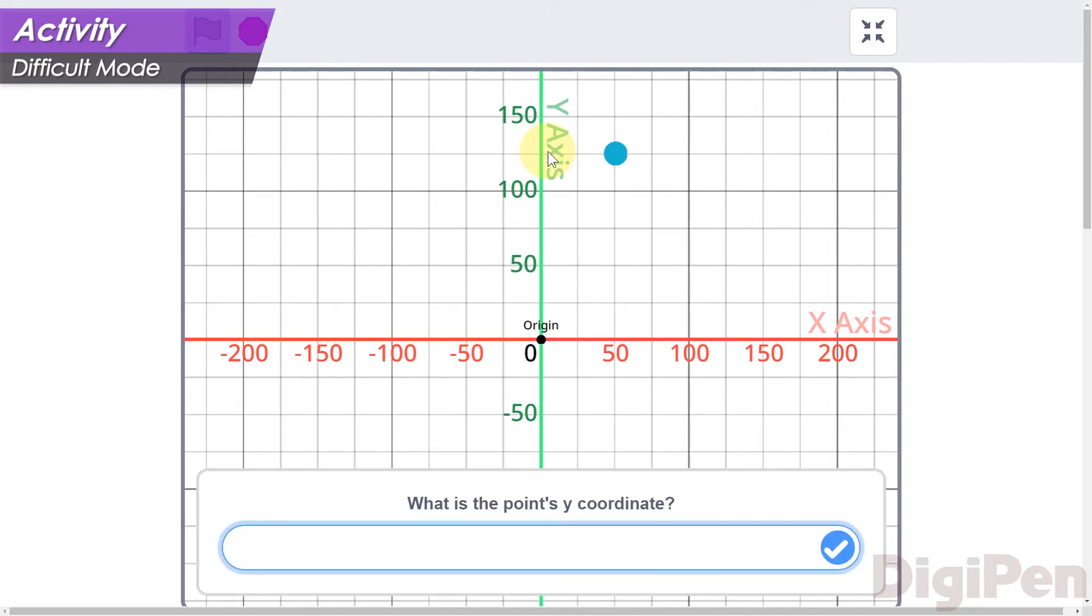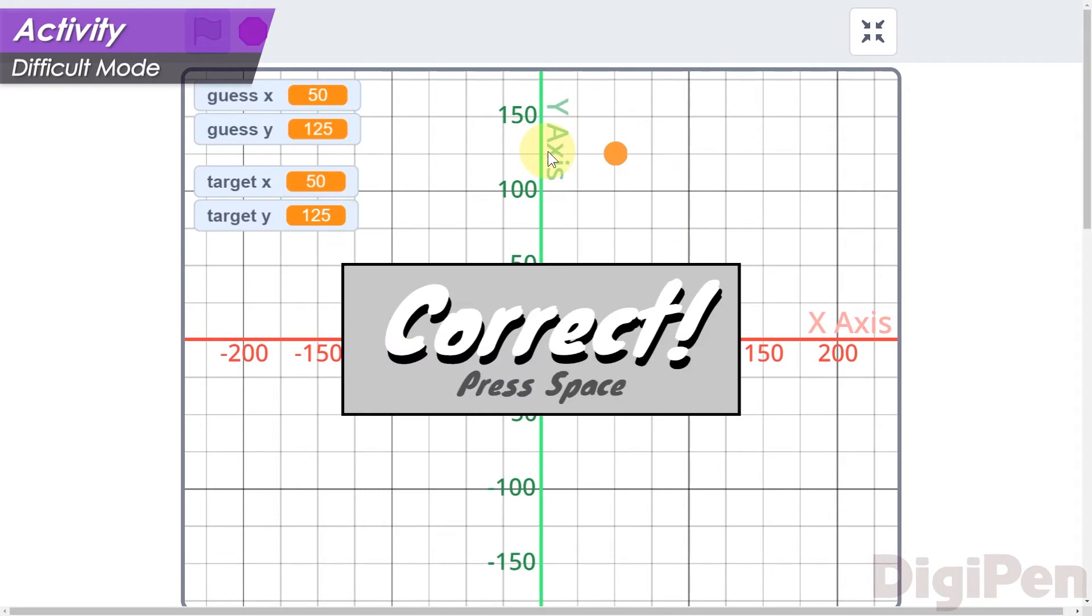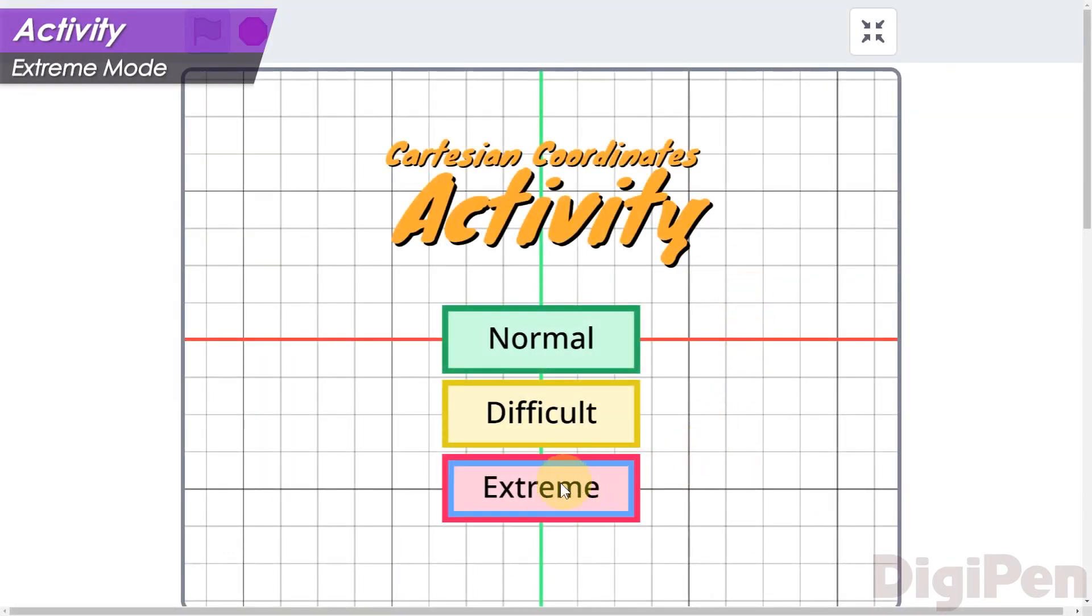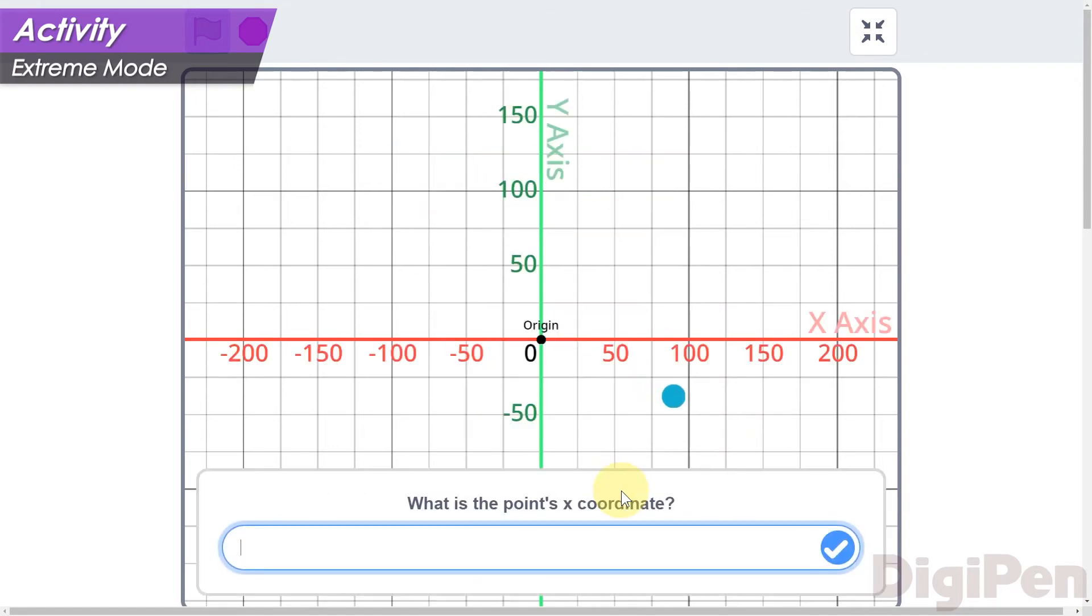If you said 50, 125, you guessed right. Finally, let's look at the hardest difficulty setting, extreme. In this mode, the circle isn't restricted at all. It can move anywhere in the grid.